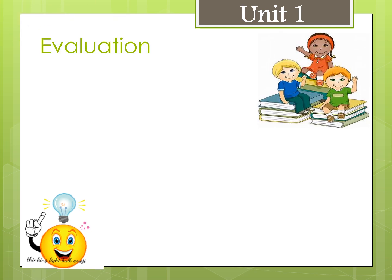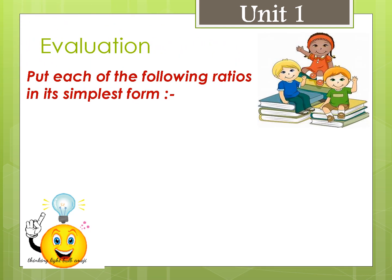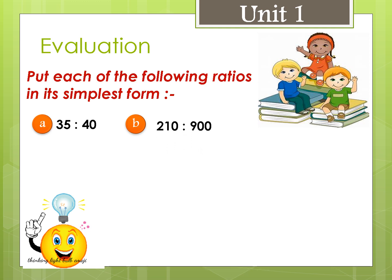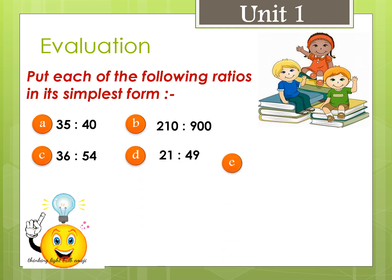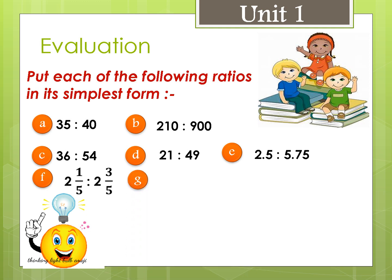Evaluation: Put each of the following ratios in its simplest form. (a) 35 to 40. (b) 210 to 900. (c) 36 to 44. (d) 21 to 49. (e) 2.5 to 5.75. (f) 2 and 1/5 to 2 and 3/5. (g) 2.5 meters to 275 cm.